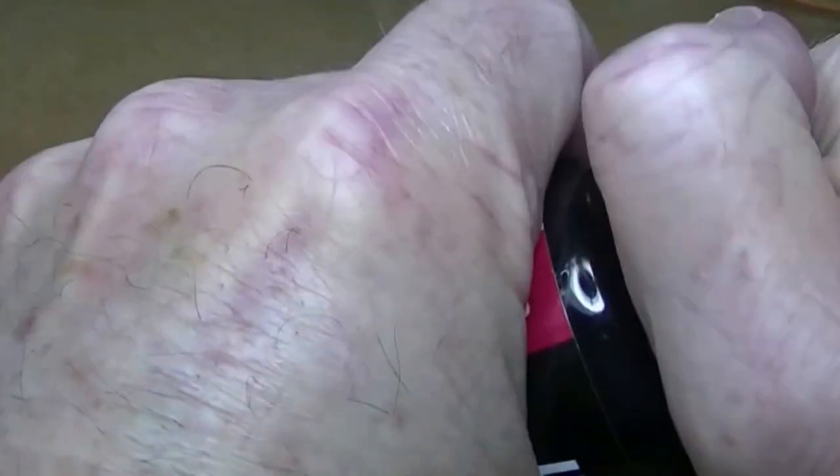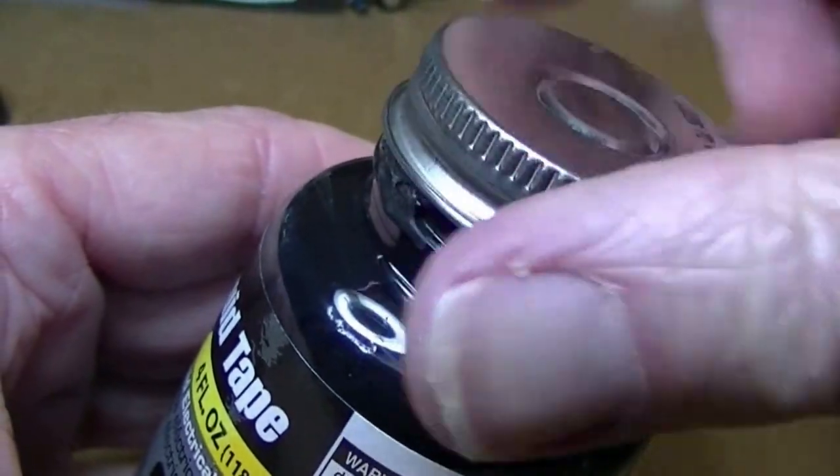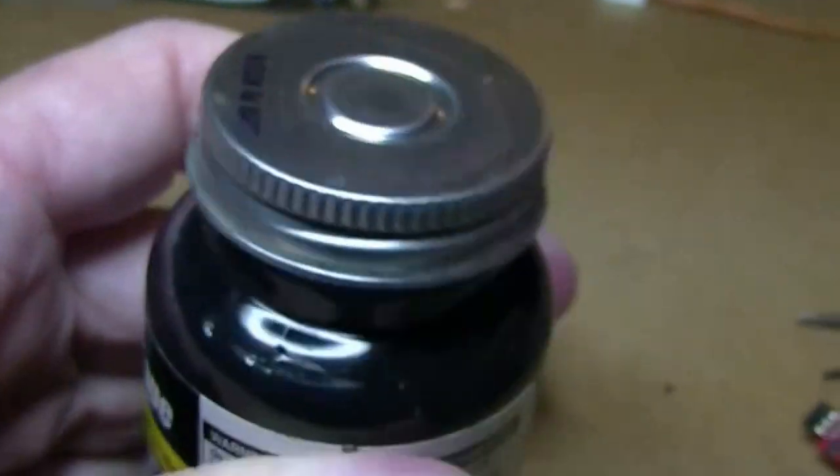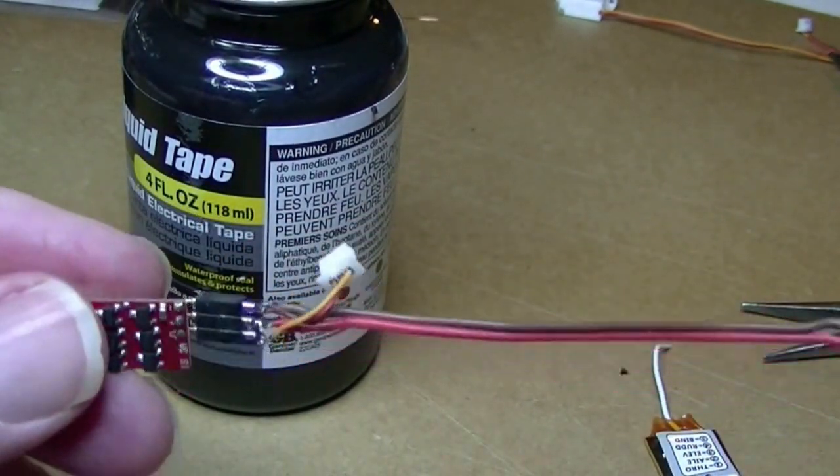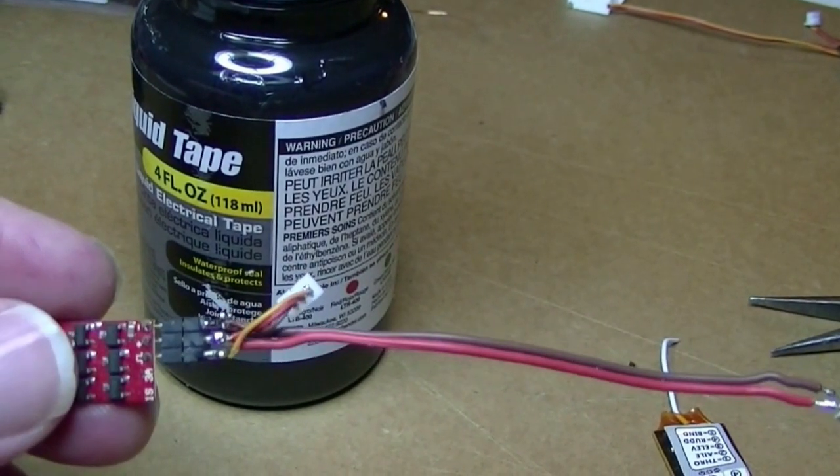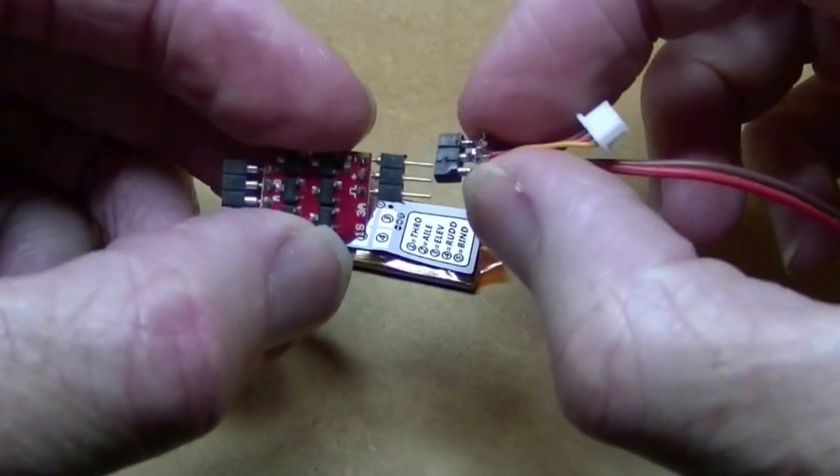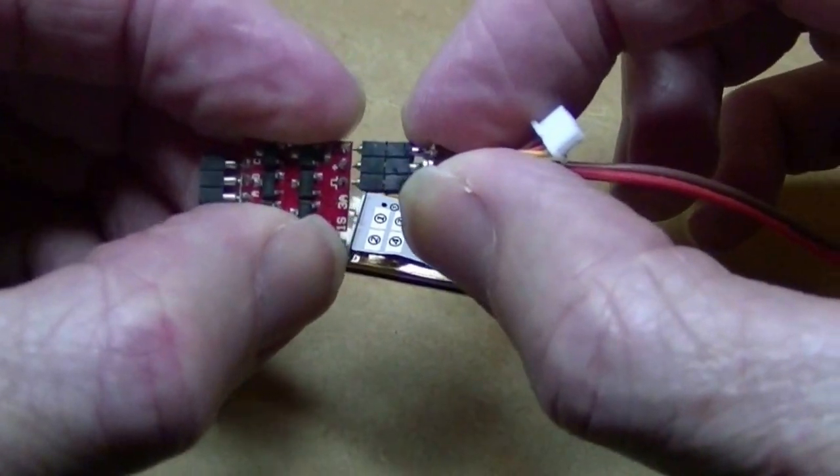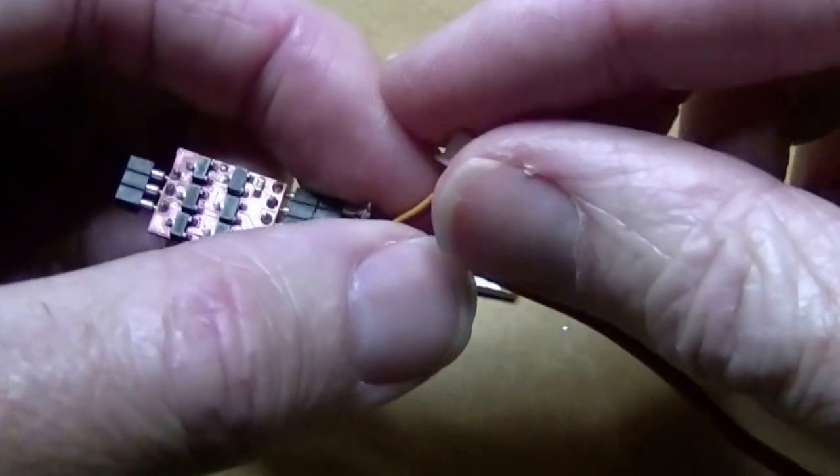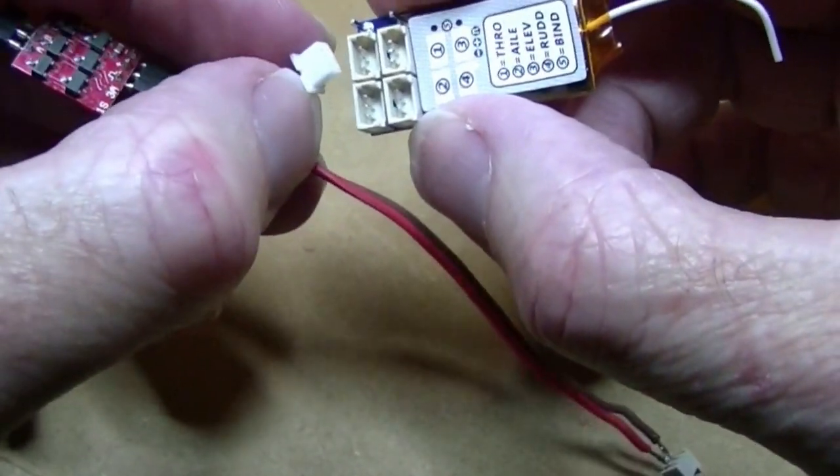I didn't put any heat shrink to cover these connections because I'm going to use liquid electrical tape. I think it came from Lowe's. You just paint it on and let it dry. It's some black stuff that doesn't smell very good but it covers the connections really well, better than I could do with tape. The harness plugs on these pins right here onto the ESC, and this end plugs onto the throttle channel which is number one.